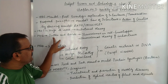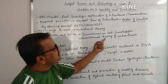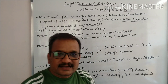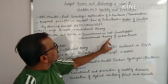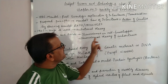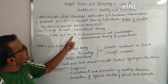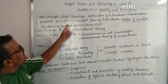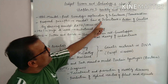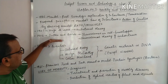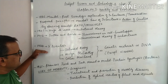Sutton and Boveri gave the chromosomal theory of inheritance. So chromosomal theory of inheritance was given by Sutton and Boveri. Mendel gave the law of inheritance — both of these are important to keep in mind.